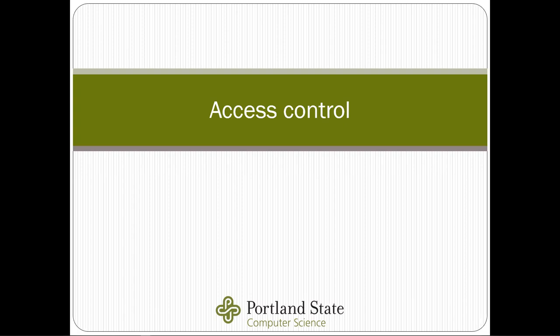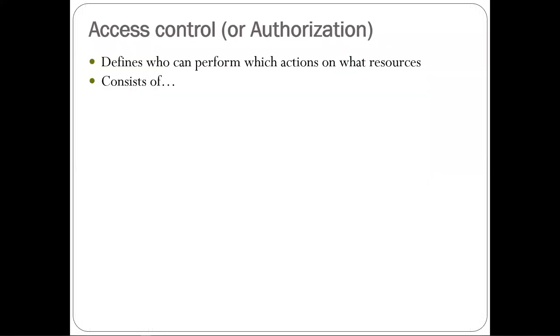We're going to talk about access control, which is a fundamental thing that security systems need to provide. Access control is synonymous with authorization, and it's the simplest thing we can teach right now in security, which is why it's often delivered first. Access control defines who can perform which actions on what resources, and it consists of four components.